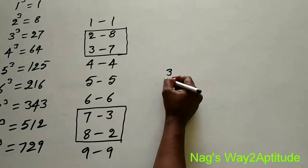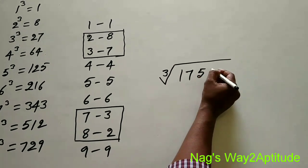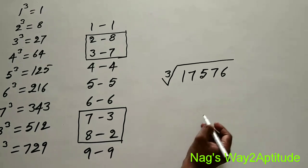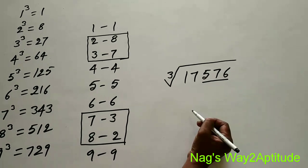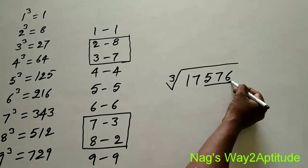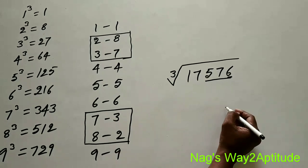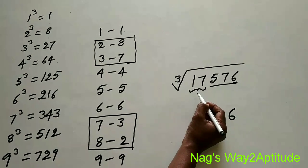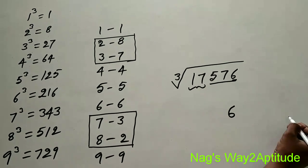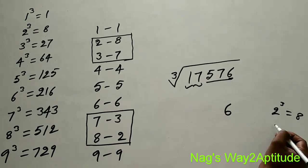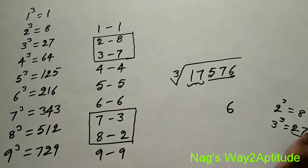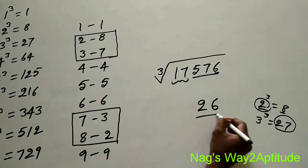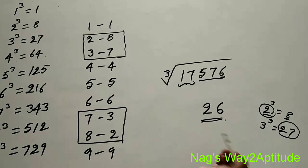Now let's find the cube root of 17,576. Take the last 3 digits — the last digit is 6. Since cube of 6 ends in 6, the units digit of the answer is 6. Now take the remaining digits: 17. What is the nearest cube not over 17? 2 cubed is 8, and 3 cubed is 27 which is bigger than 17, so we take 2. Therefore the cube root of 17,576 is 26.